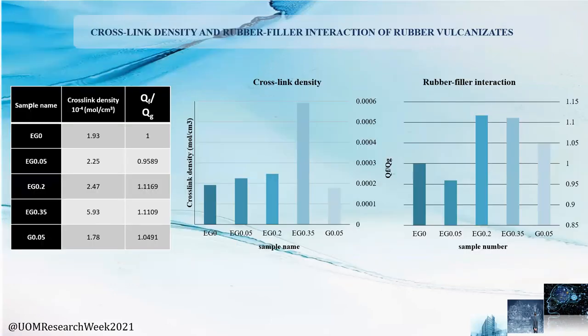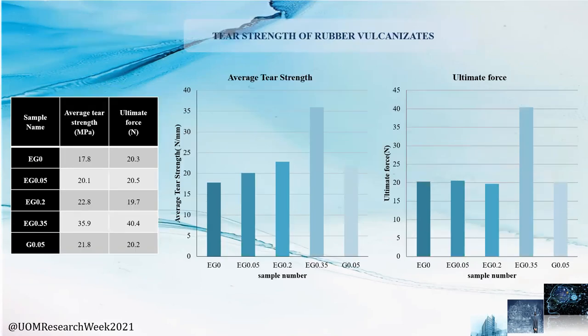Here we have plotted the calculation results of cross-linking density and rubber-filler interaction using the swelling test. Cross-linking density of rubber vulcanizates has been increased with the increased amount of exfoliated graphite being used, which directly affects the mechanical properties of the final rubber vulcanizates. When it comes to rubber-filler interaction, if the indicator is higher than 1, the rubber-filler interaction is considered lower. From the chart, we can see that rubber-filler interaction has been increased when graphite is exfoliated. There is also a limit: after 0.2% of exfoliated graphite, the rubber-filler interaction is reduced.